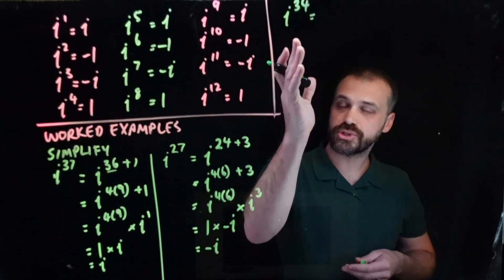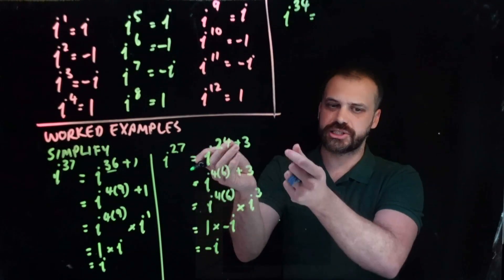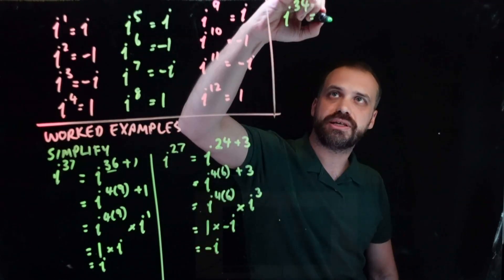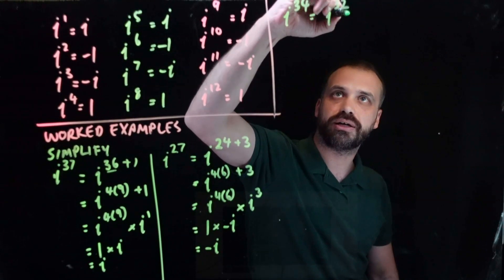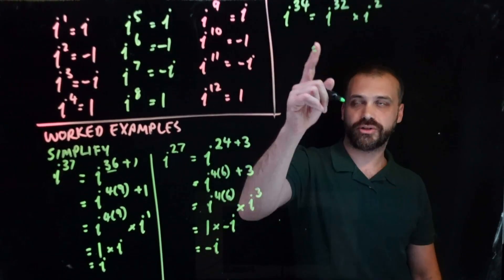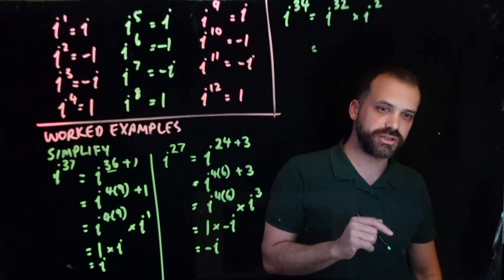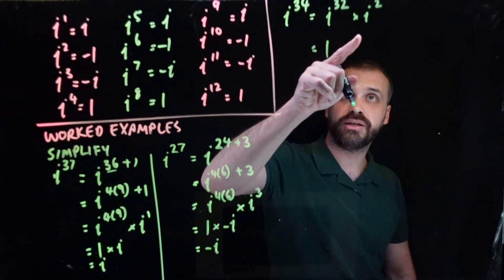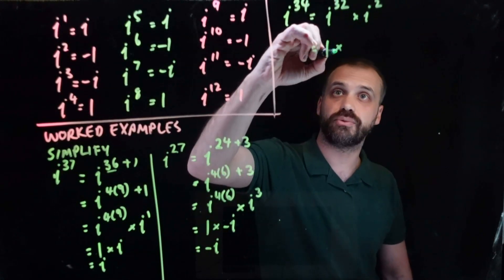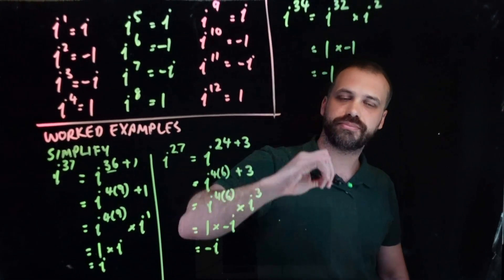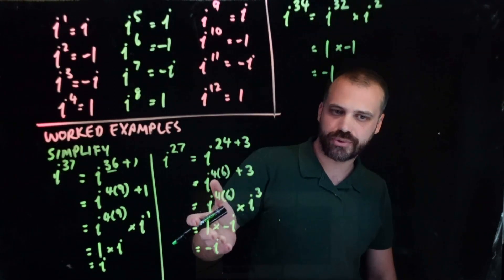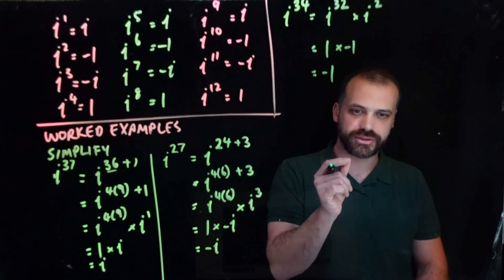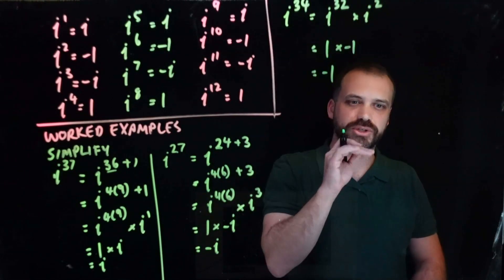One more example — i to the 34 — and this time I'm going to do it in a speedier version with fewer lines of working. i to the 34 is equal to i to the 32 times i to the 2. Because 32 is a multiple of 4, i to the 32 is equal to 1. And i squared is equal to negative 1. So 1 times negative 1 is negative 1. We've brought it down to three lines of working. This is what we should be looking at when doing this kind of work.